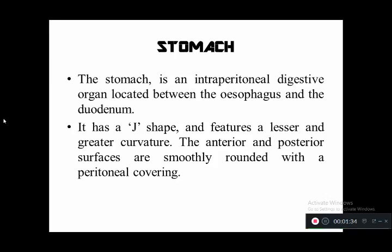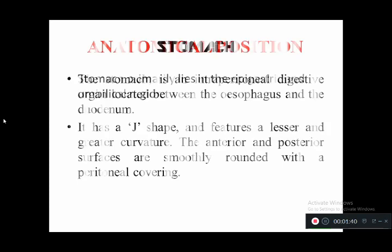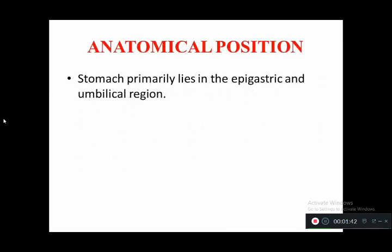The anatomical position of the stomach: it primarily lies in the epigastric and umbilical region. When you divide the abdomen into nine quadrants, the stomach is situated in the epigastric and umbilical region. This is the diagram you have to draw first when explaining the stomach.